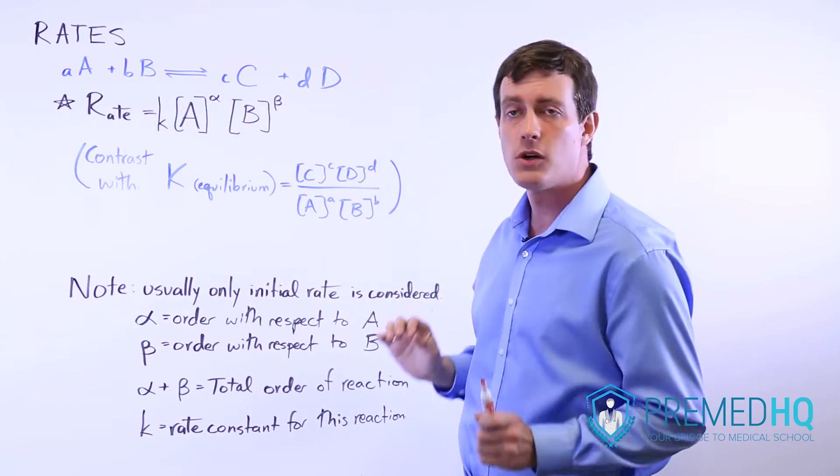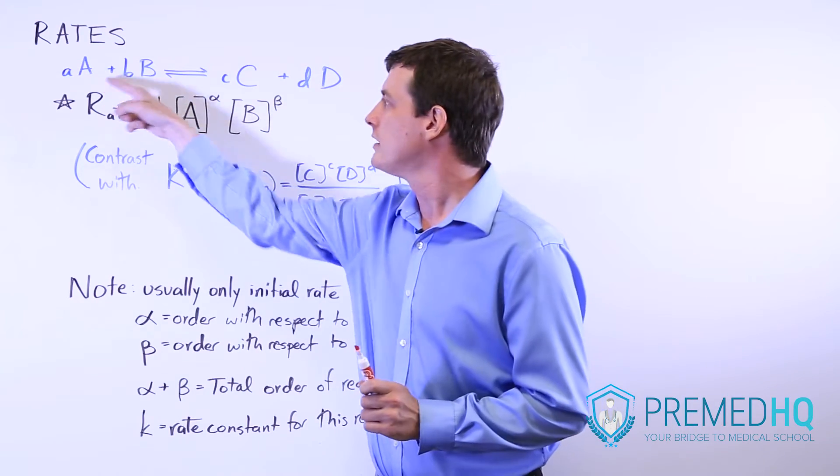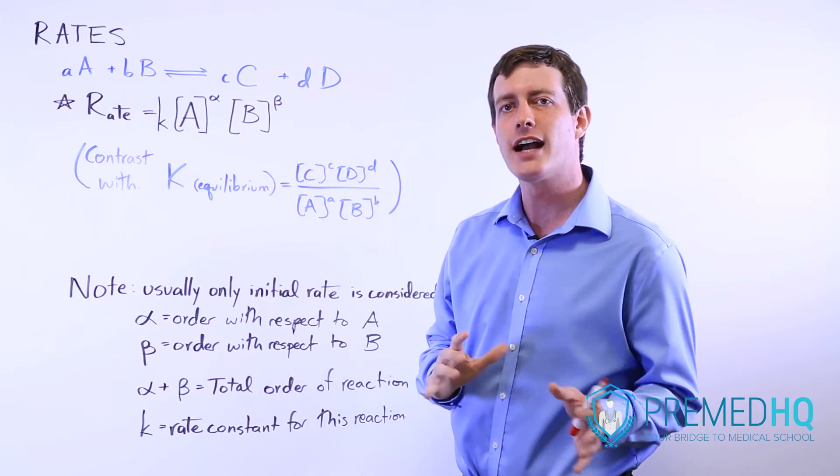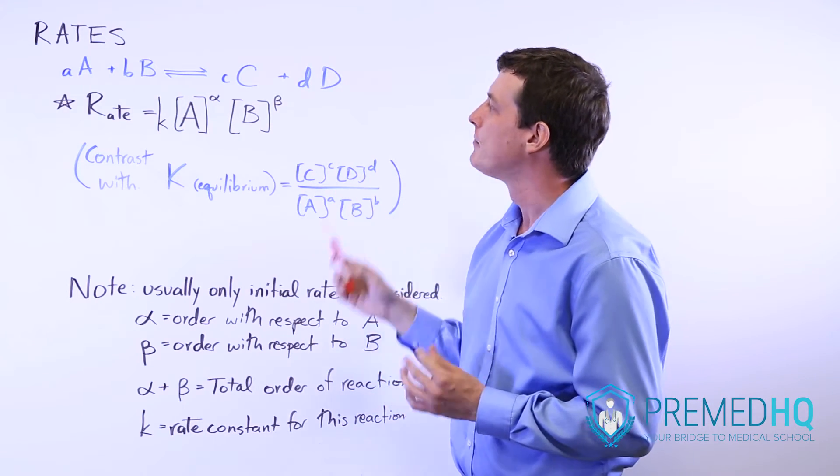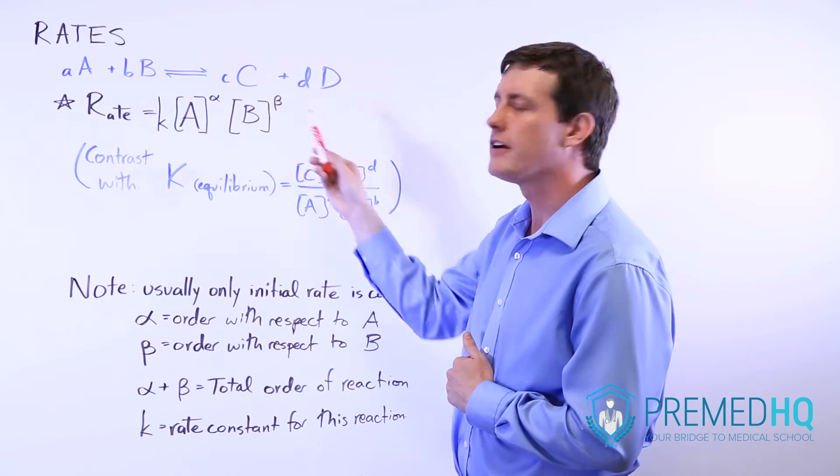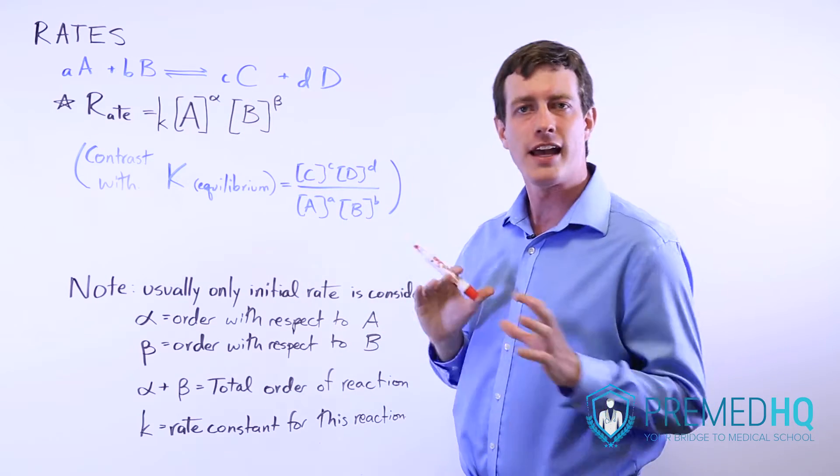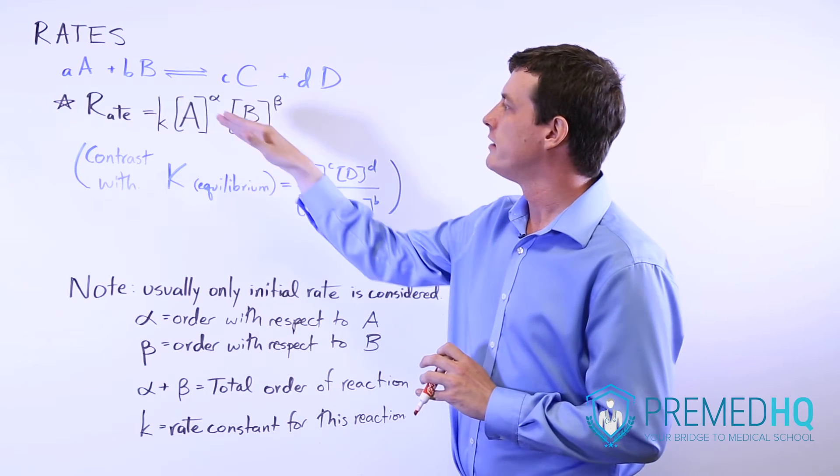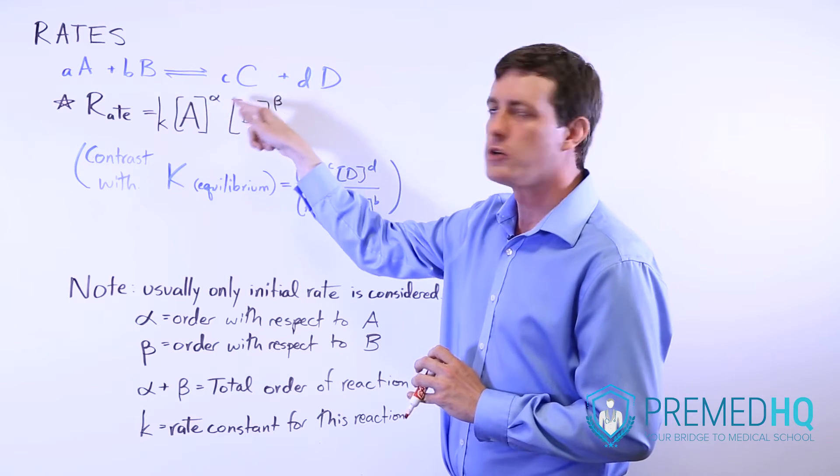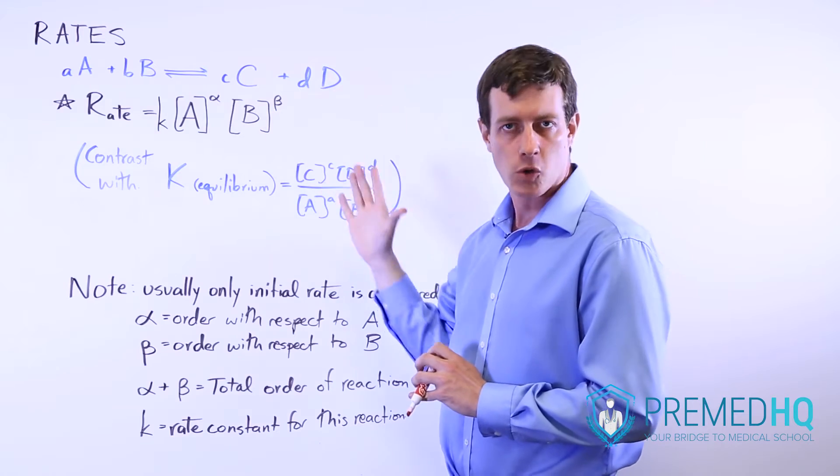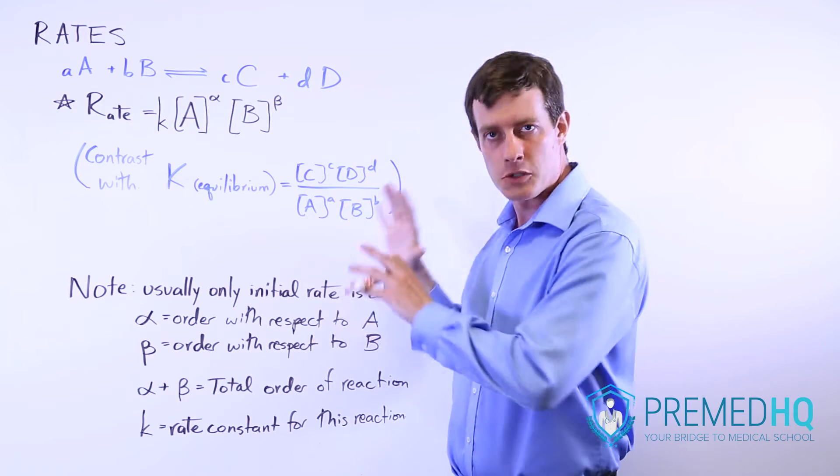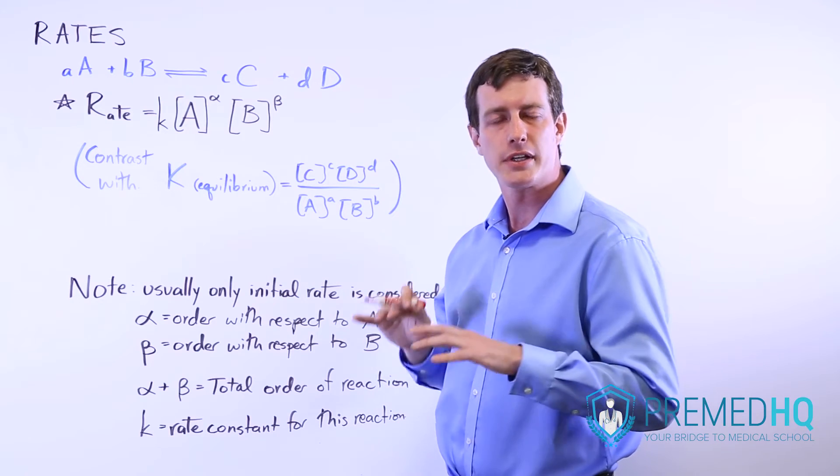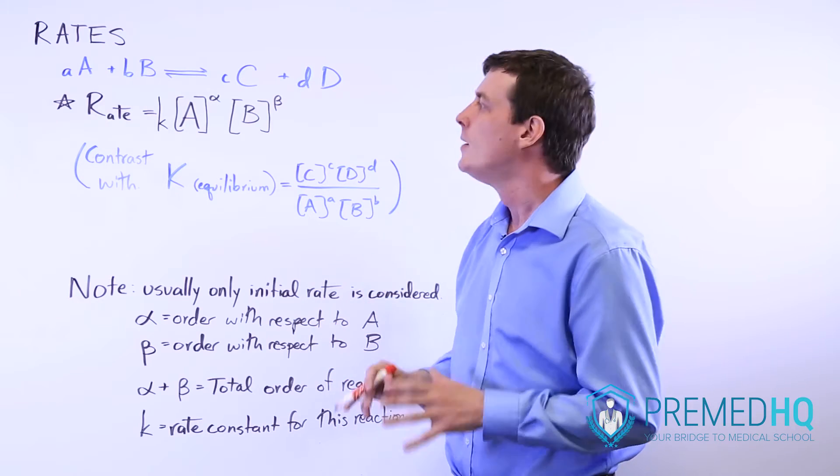Notice that we're only looking at the reactants because it's only the concentrations of the reactants that influence a rate. Also notice that we used alpha and beta rather than lowercase a and b because it's not always true that rate laws follow stoichiometry when you're looking at the order of them. Sometimes they do, which we'll get to in a second, but sometimes they may not, especially in complicated multi-step reactions.